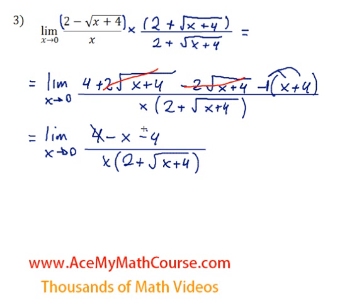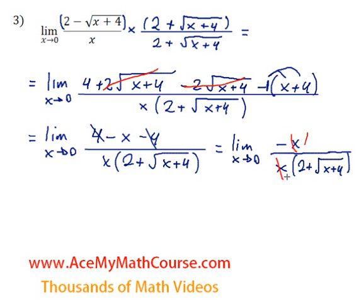4 minus 4 is 0. So we're going to have the limit as x approaches 0 of negative x over x times 2 plus root x plus 4. Now, look at this. We can cancel out the x's. We've got one up top, one down at the bottom. Which we don't really even need to write down, because it would distribute in there anyways and not change anything.